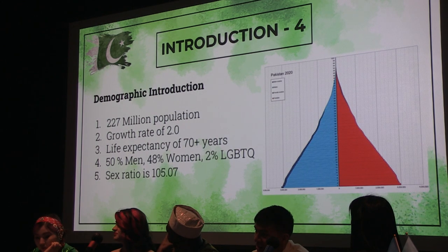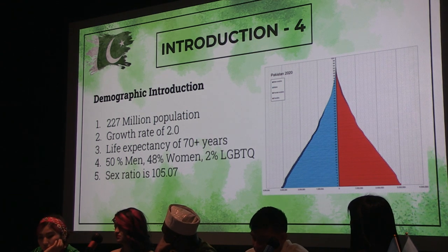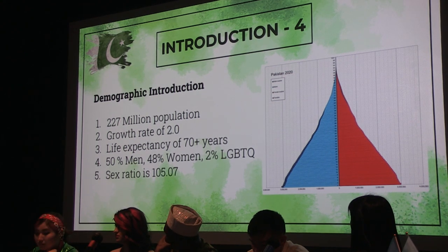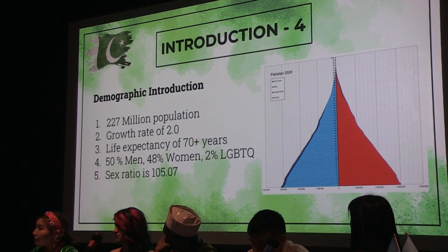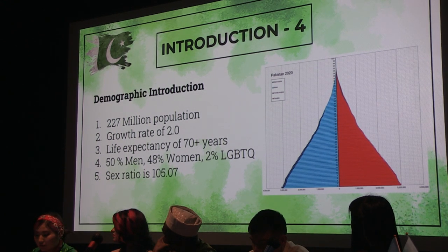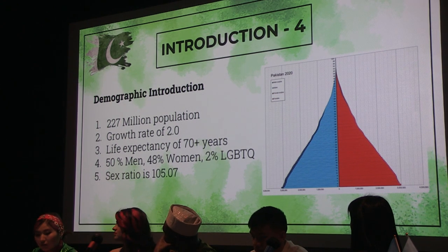A little bit about the Pakistani population: 227 million people with a growth rate of 2.0 and a life expectancy of 70 plus years. Our gender division is 50% men, 48% women, and 2% LGBTQ. The sex ratio of Pakistan is 105.07.